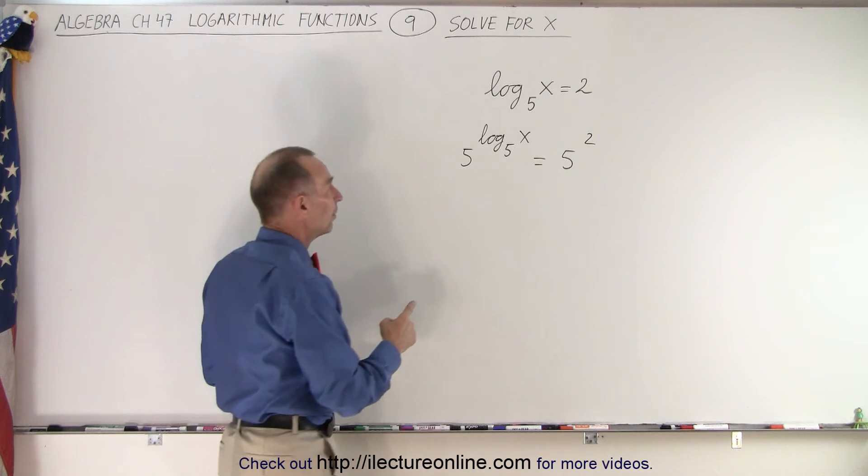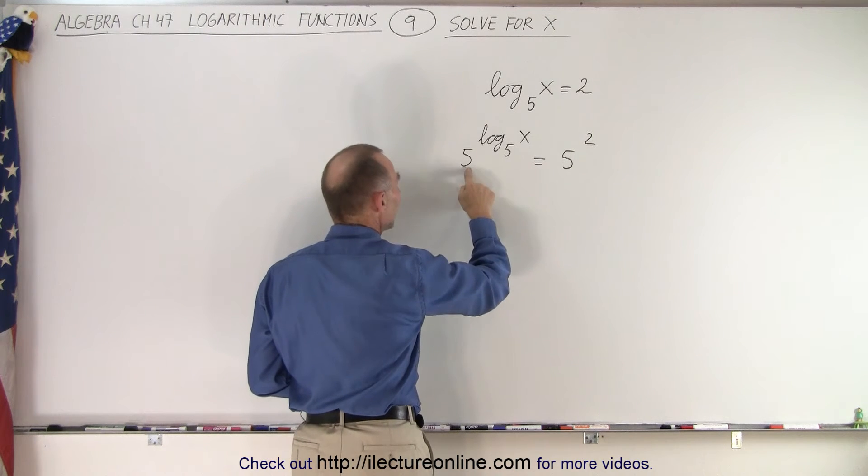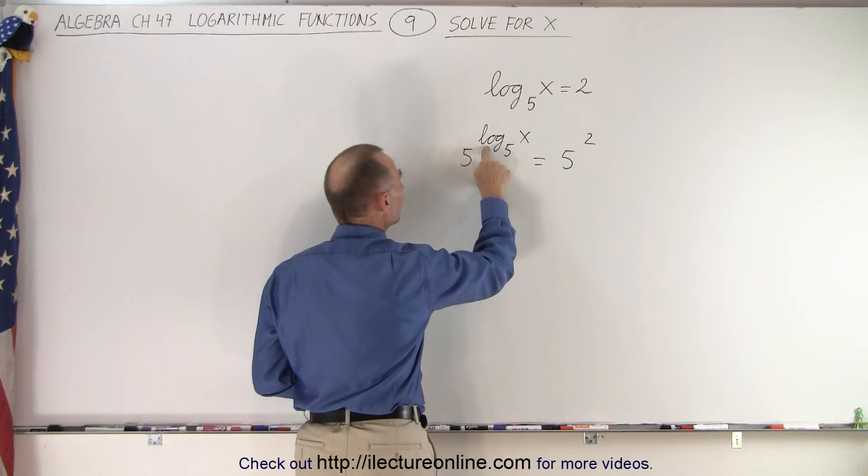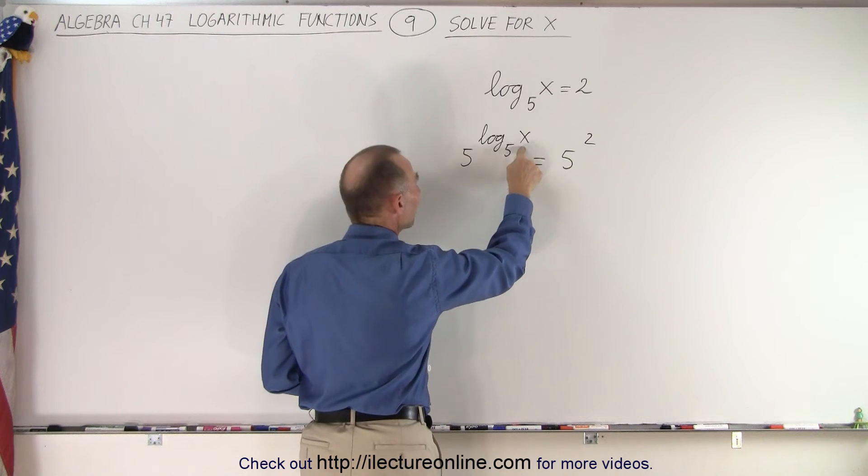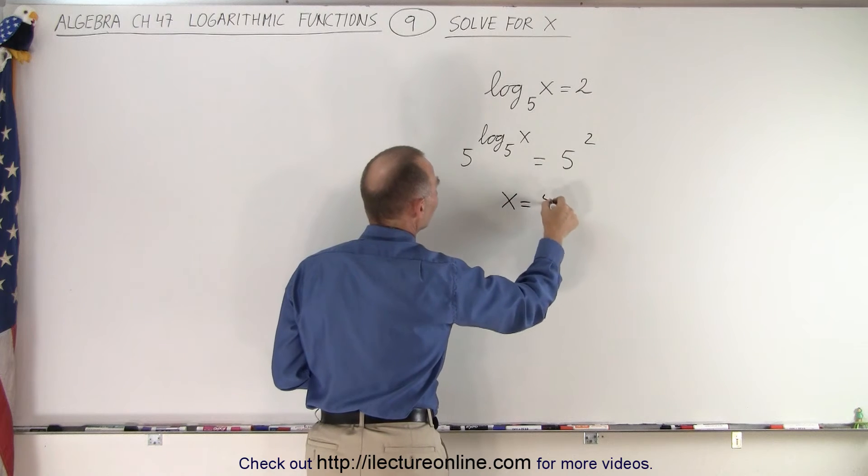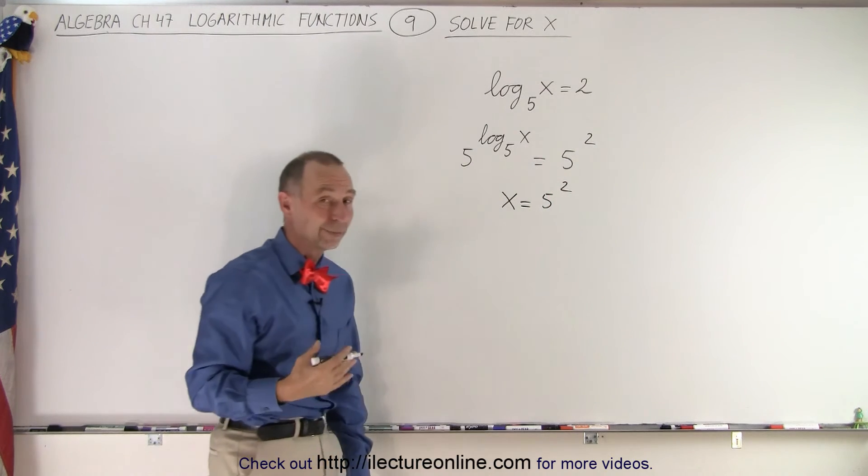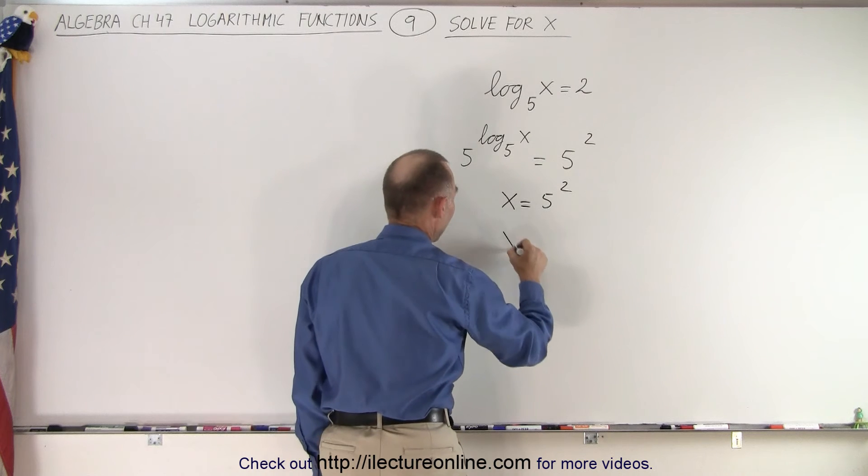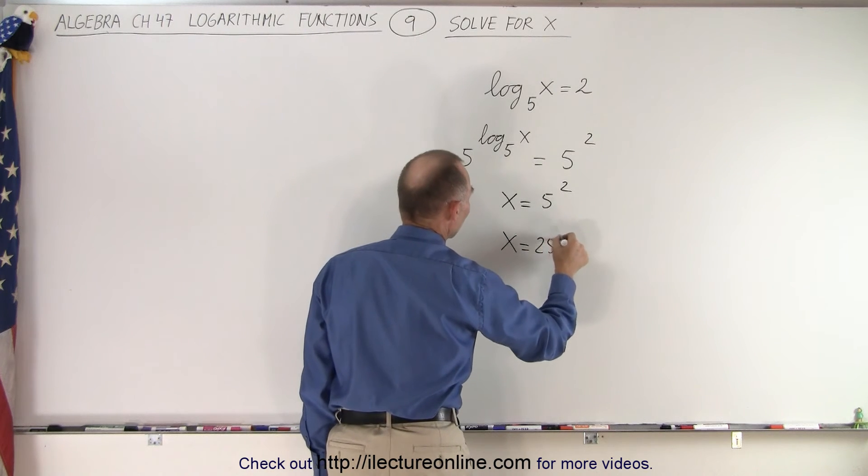Now here we remember that if we take the base 5 and raise it to the exponent log base 5 of x, we simply get x. So this becomes x equals 5 to the second power. And of course, 5 to the second power is equal to 25, so x equals 25.